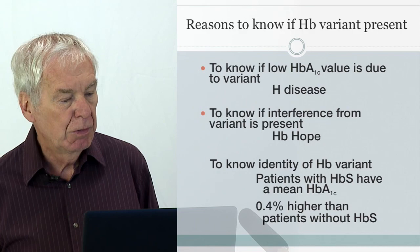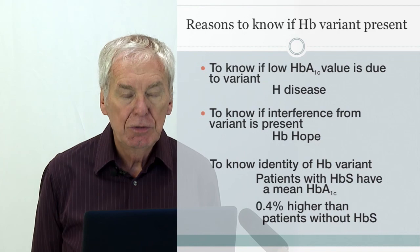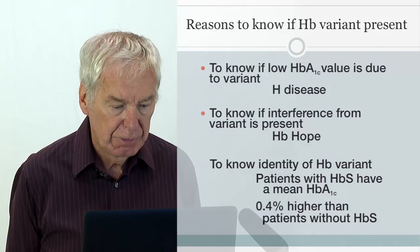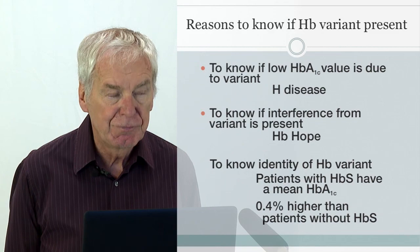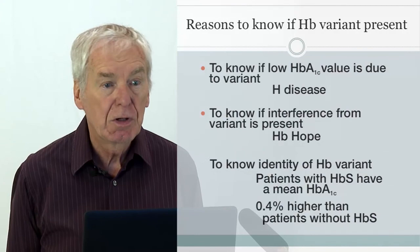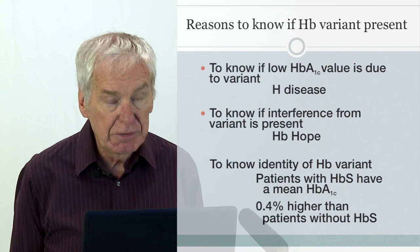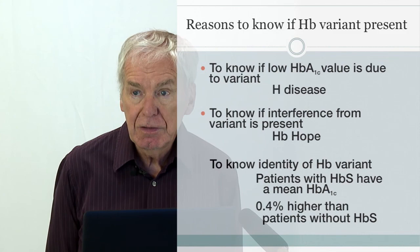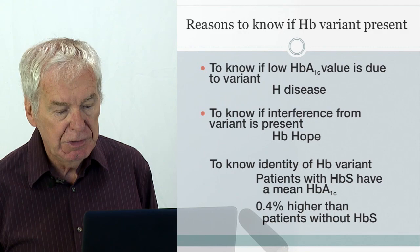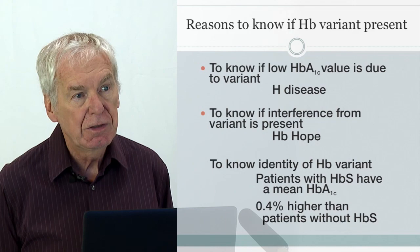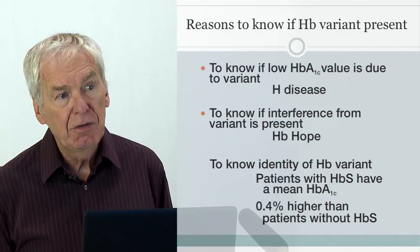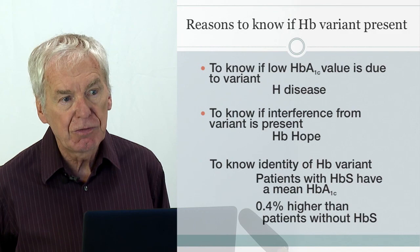Why is this important? We need to know if A1c is low due to a variant such as hemoglobin H disease. We need to know if interference producing a high result is possible from variants like hemoglobin Hope or hemoglobin Athens Georgia. And we need to know the identity of the variant — not just that it's present — because patients with hemoglobin S have a median A1c 0.4% higher than patients without. This raises the question of whether the threshold of 6.2% or 7.0% for good glycemic control is the same in Caucasians as in individuals with hemoglobin S.